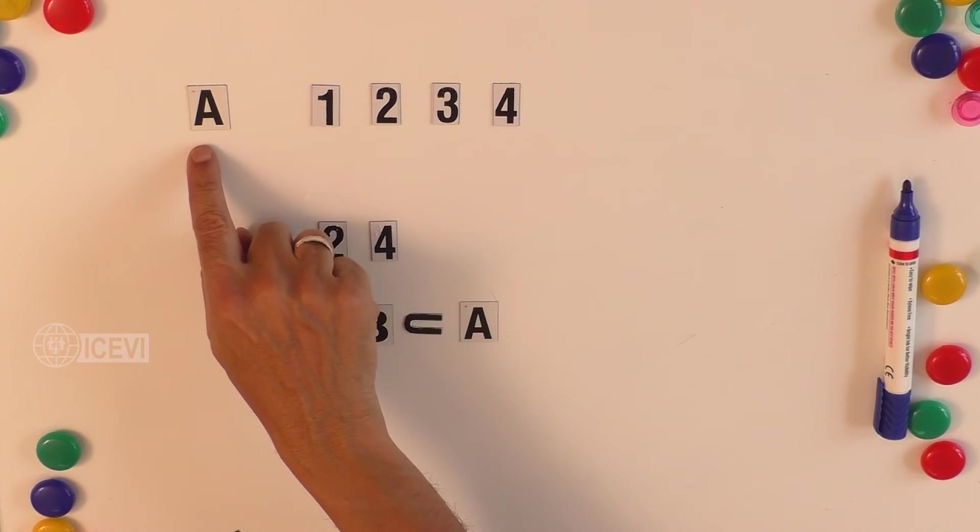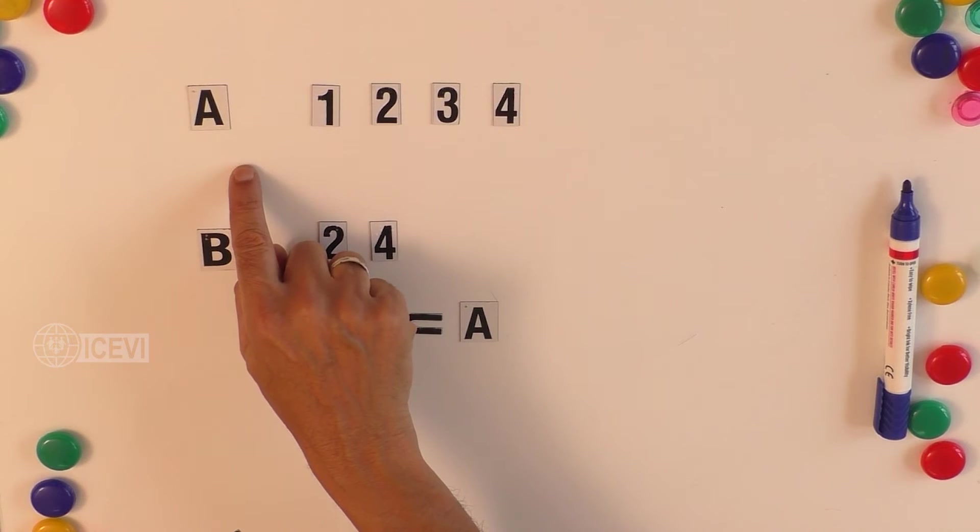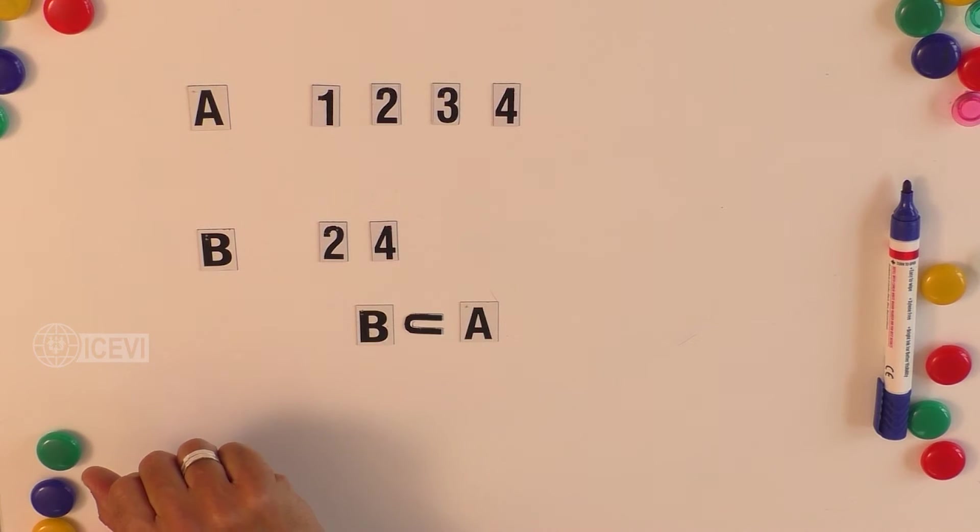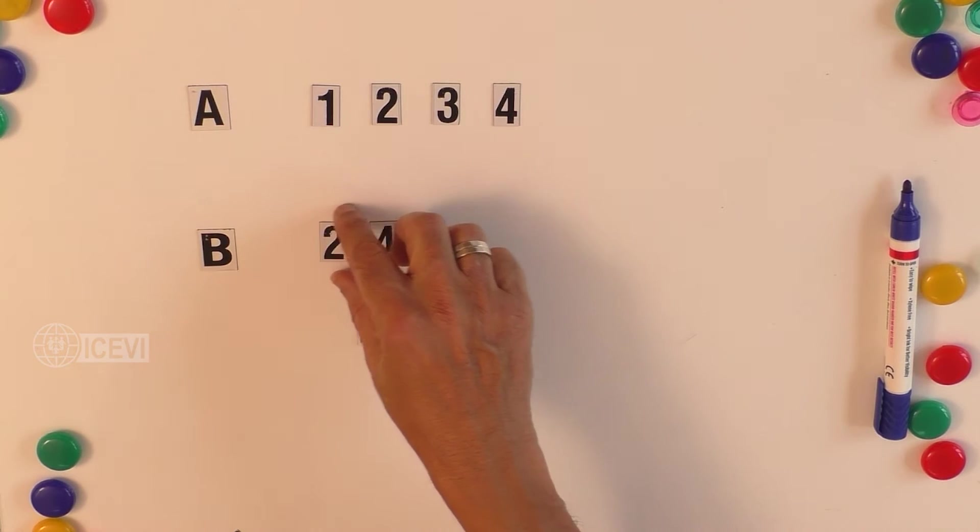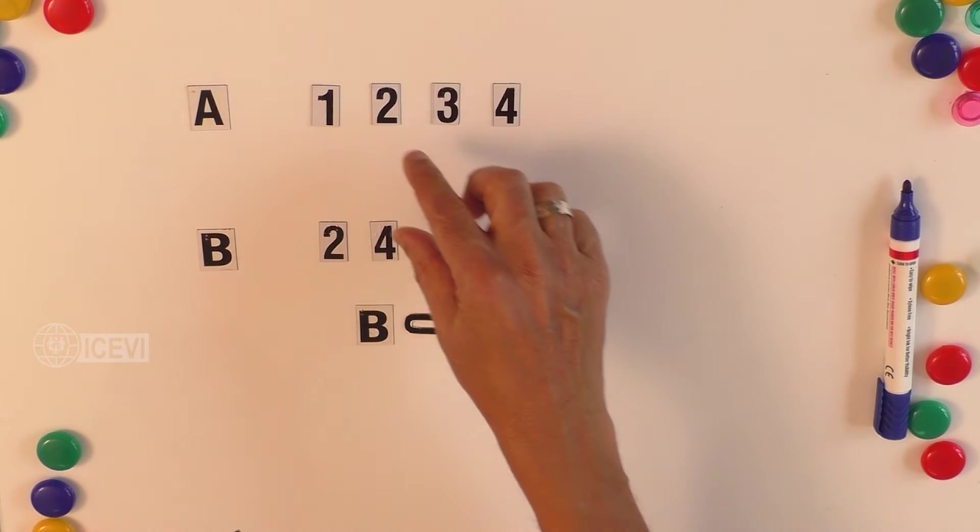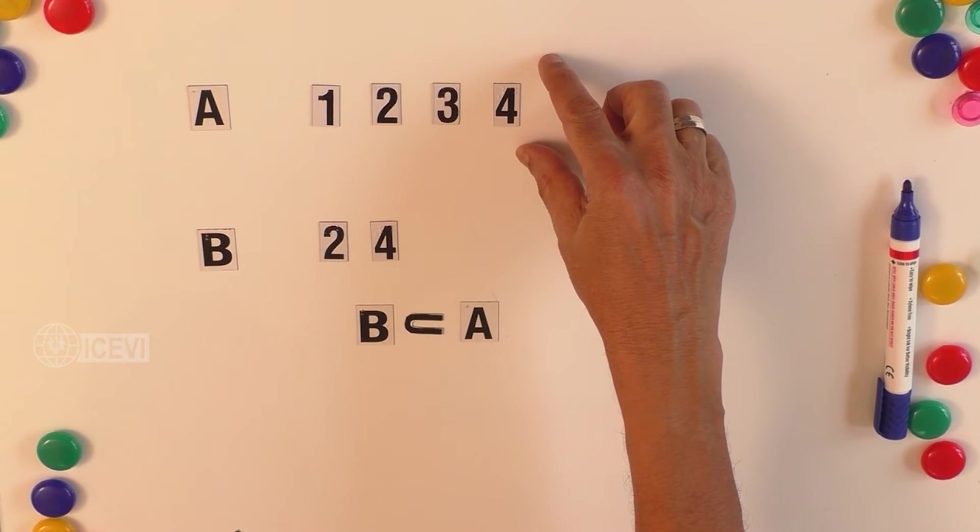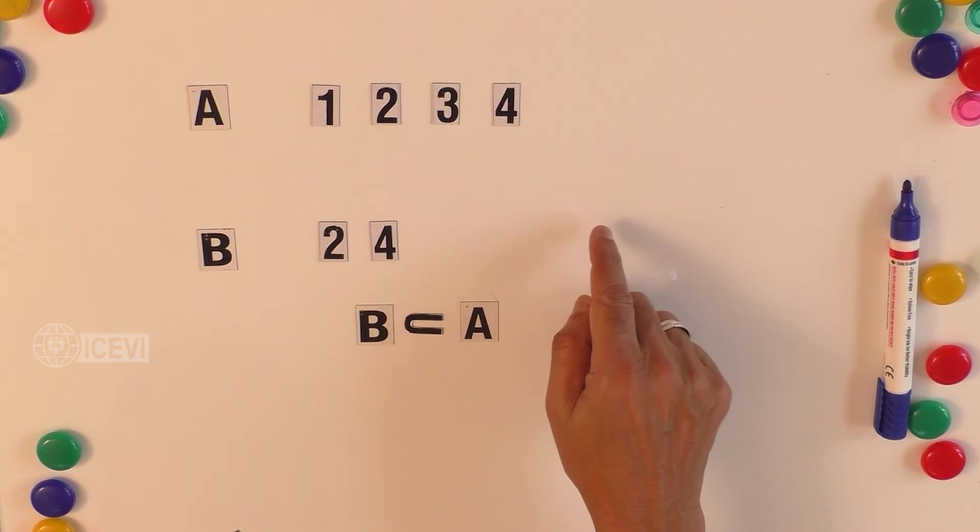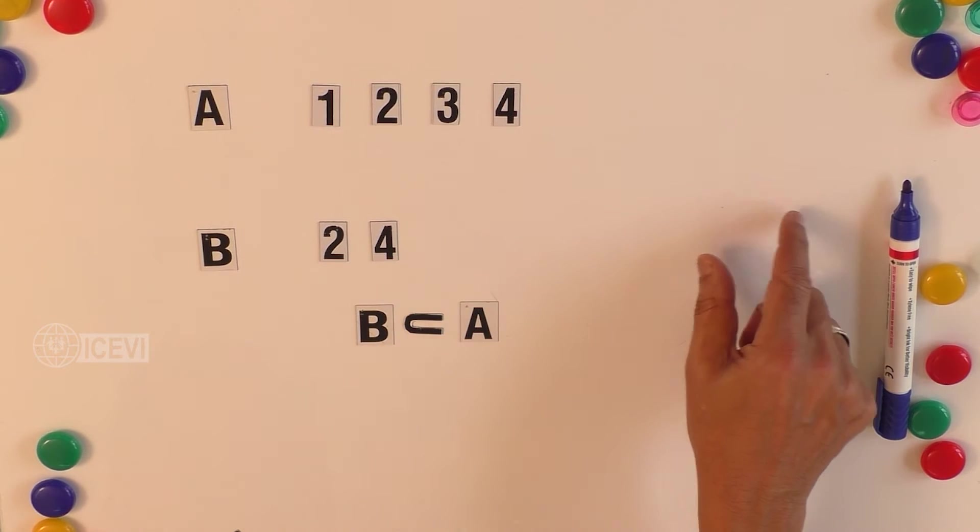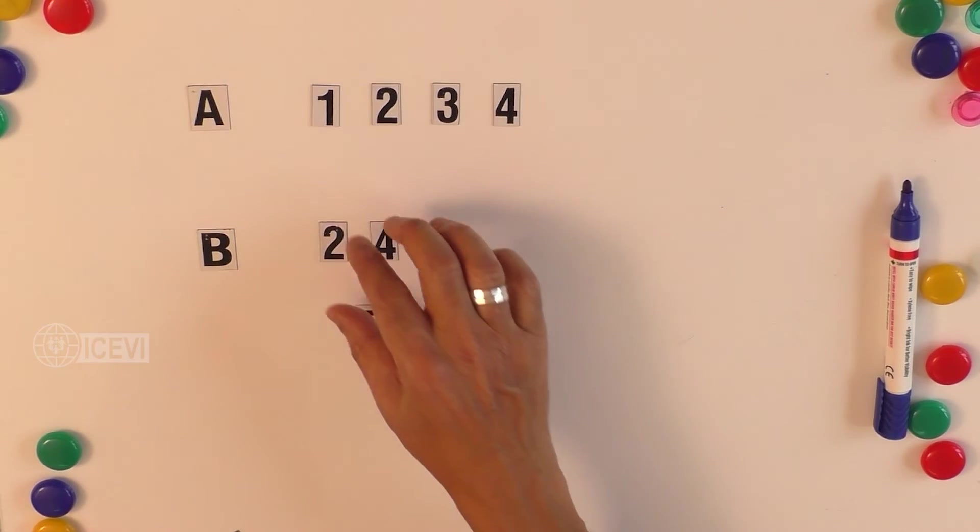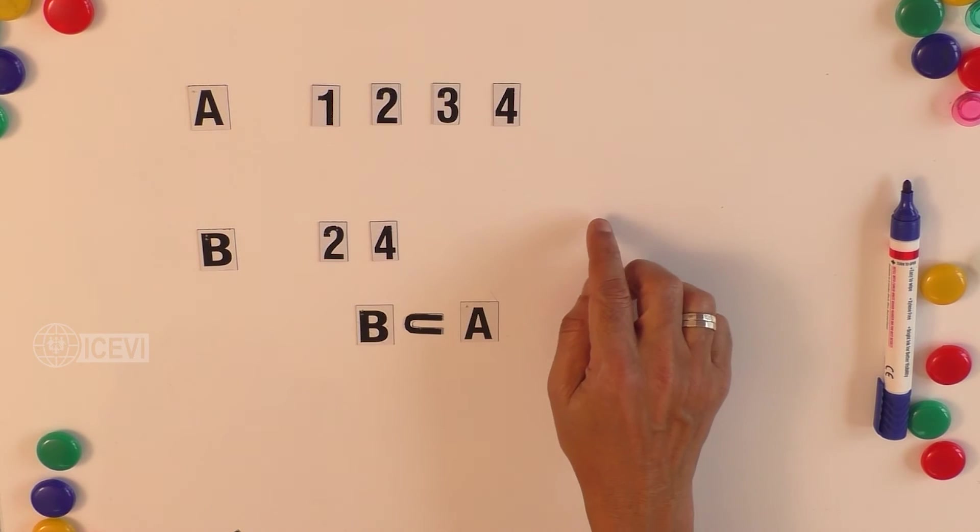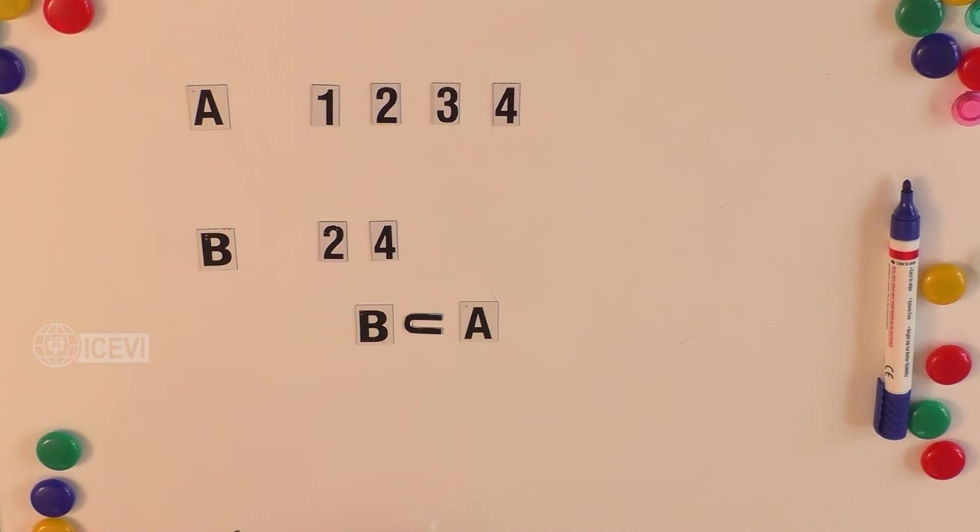Now students in the class consist of boys and girls. So when you take set B as boys and set A as the students of the class, then boys will become a subset of the class. Similarly, when you take A as the class and B as the set of girls, then B becomes a subset of set A.